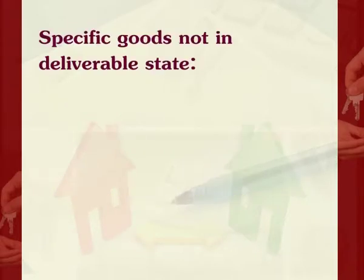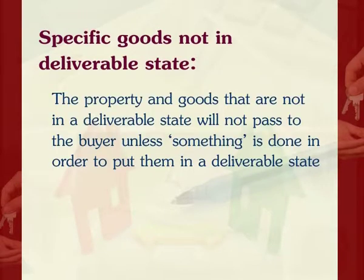Specific goods not in deliverable state. The property in goods that are not in deliverable state will not pass to the buyer unless something is done to put them in deliverable state. For example, a certain quantity of oil was purchased by Ajay, to be filled in tins. Bharat filled some of the tins and informed Ajay to take delivery. Before Ajay could collect delivery, a fire destroyed the entire quantity of oil. Ajay, the buyer, will bear the loss of the oil which was filled in the tins as it was in deliverable state and ownership had transferred. For the balance oil, the seller must bear the loss.